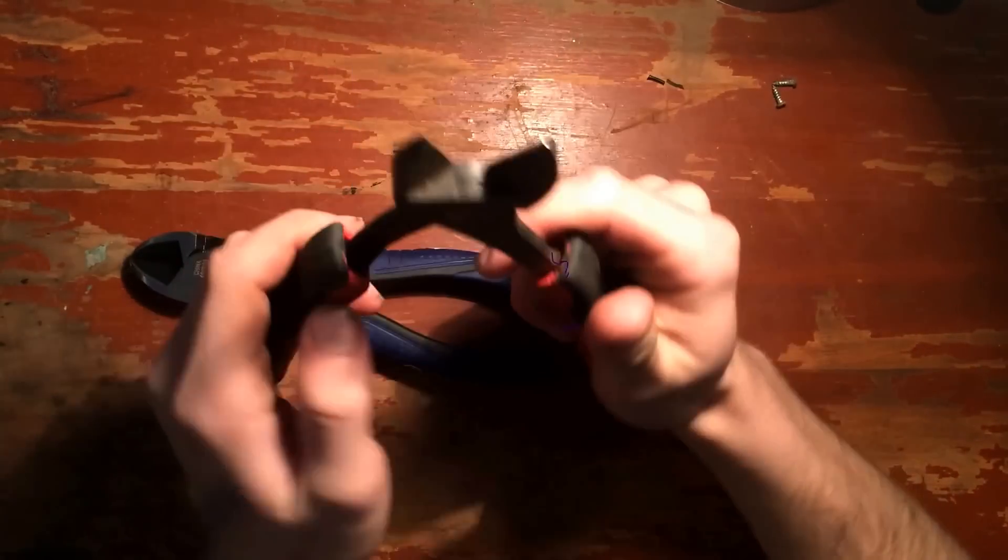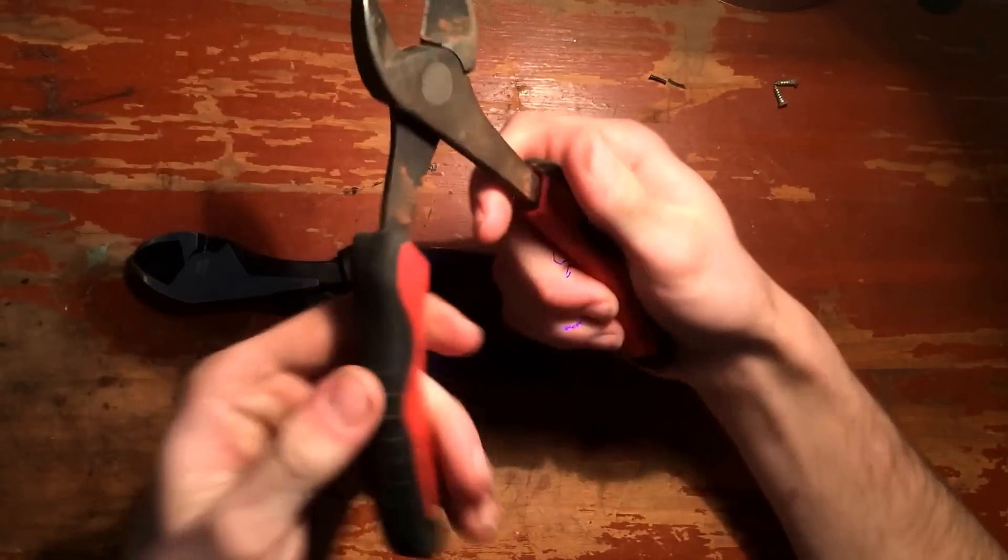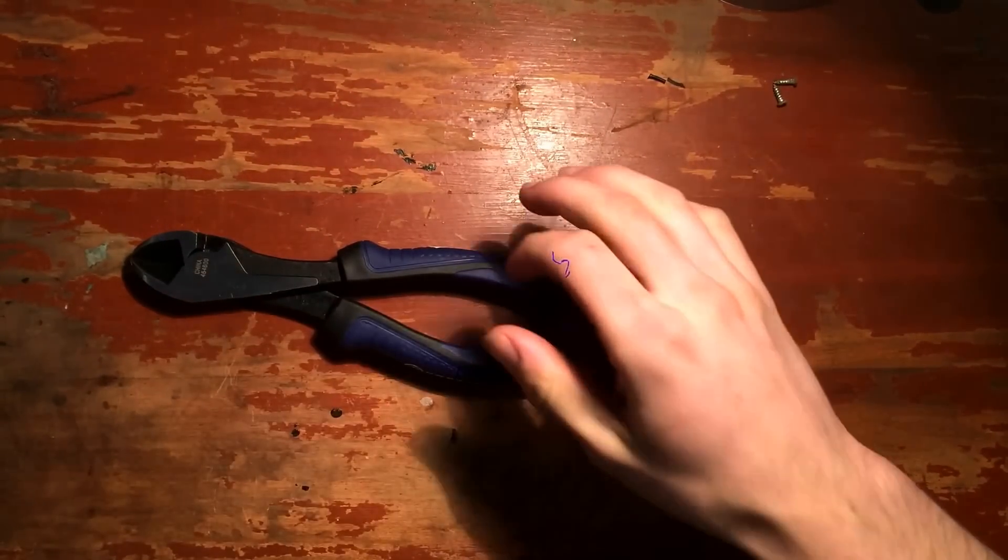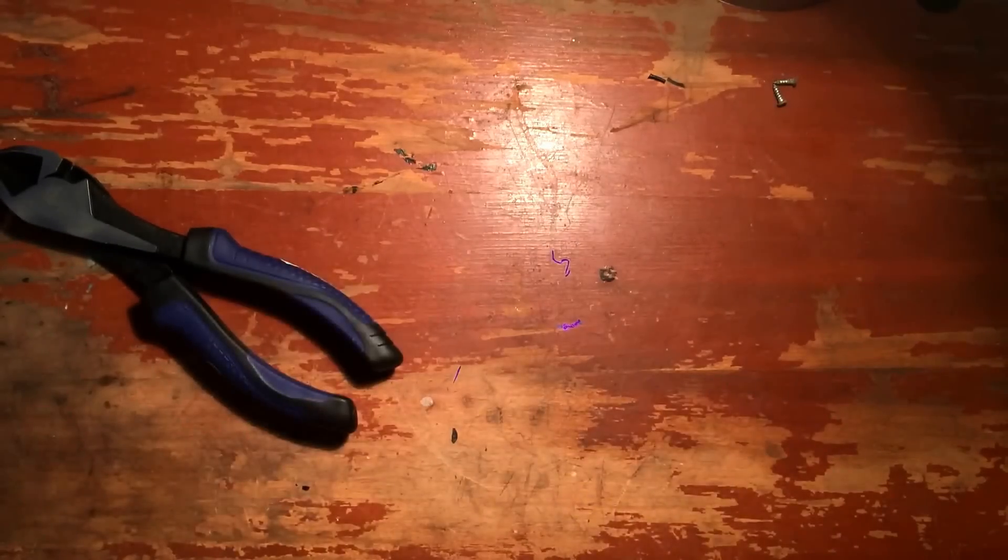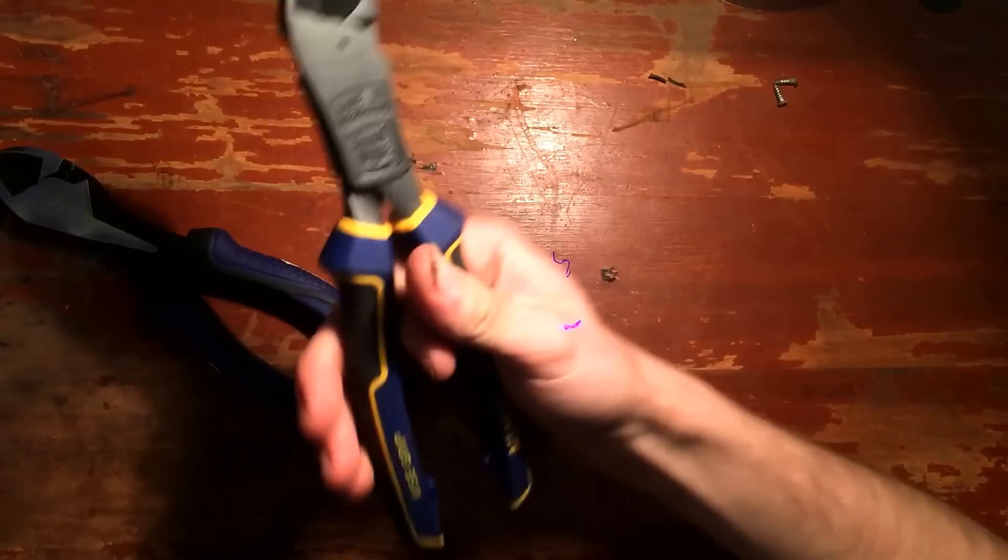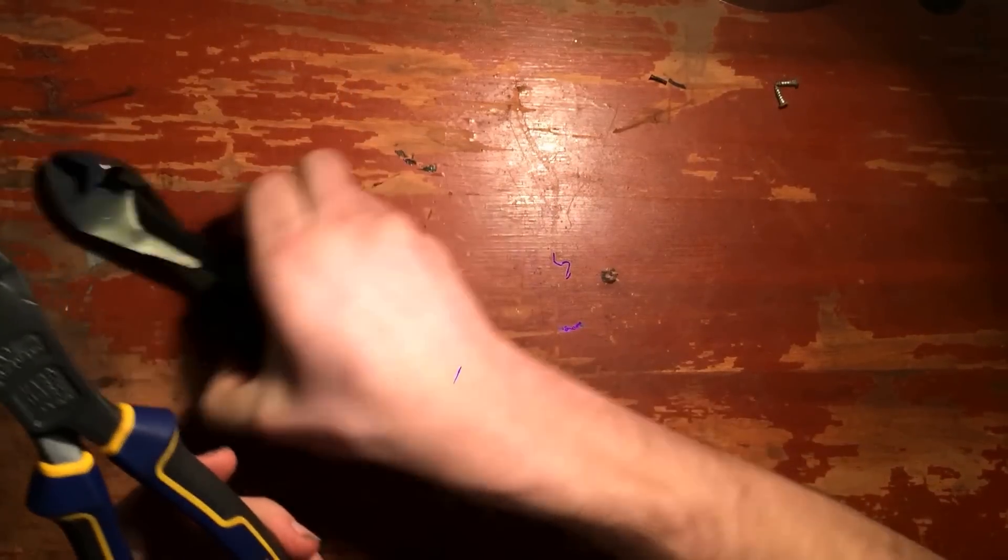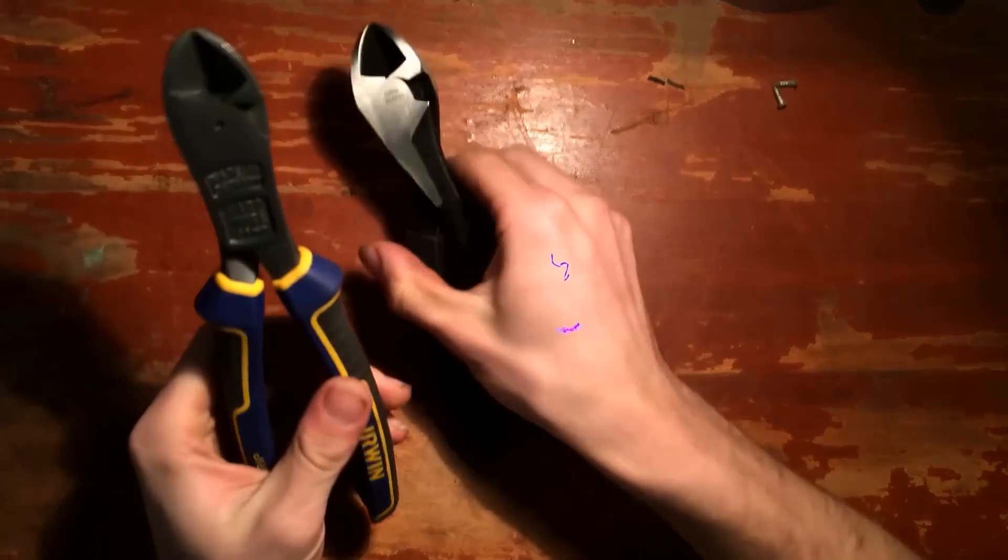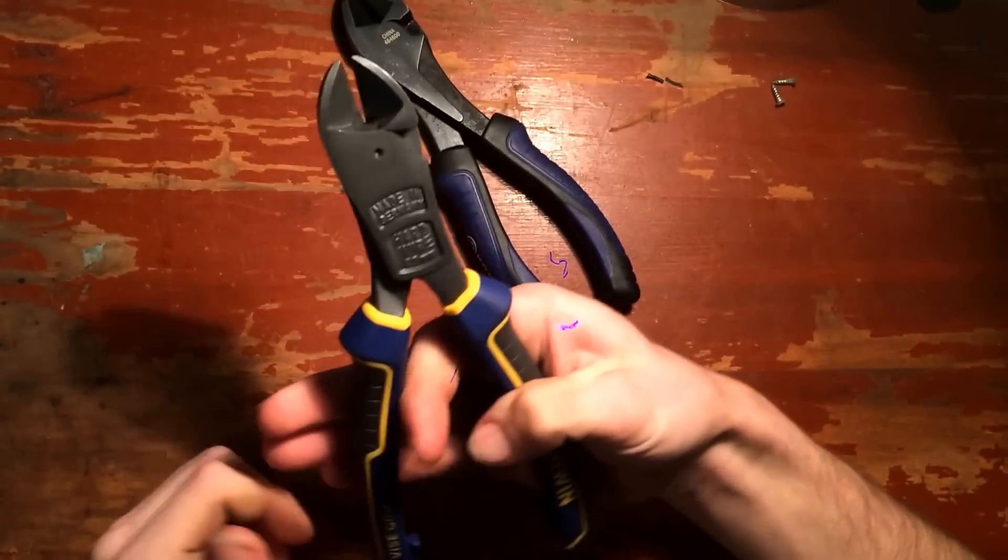And then we got the Irwin Visegrip. These ones can be kind of cumbersome. They're a lot bigger. And then the jaws don't open up as far.